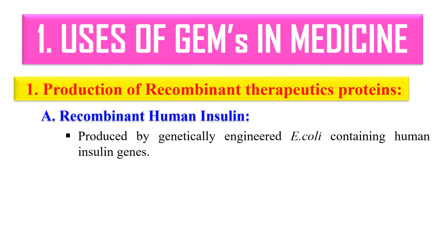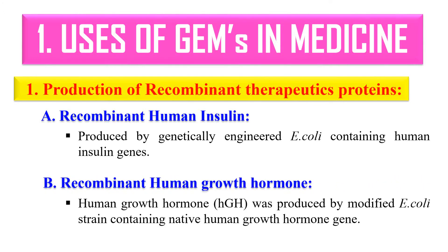Recombinant insulin is produced by genetically engineered E. coli bacteria into which the human insulin gene has been transferred. Similarly, human growth hormone was also approved by the FDA in 1985, and it was produced by modifying the E. coli strain that contains the native human growth hormone genes.